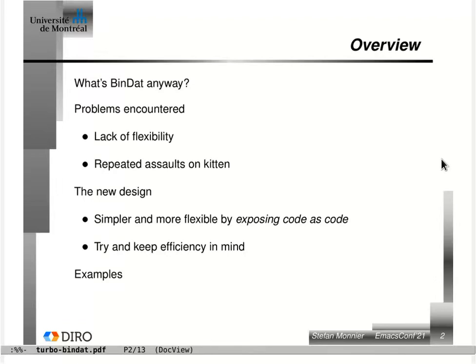And some of it was poor behavior with respect to scoping and variables — basically uses of eval. Eval is evil. Then I'm going to talk about the new design, how I redesigned it to make it both simpler and more flexible, where the key idea was to expose code as code instead of having it as data. The distinction between the two is important and made things simpler. I tried to keep efficiency in mind, which resulted in some aspects of the design that are not completely satisfactory. But the result is actually fairly efficient, even though it was not the main motivation.